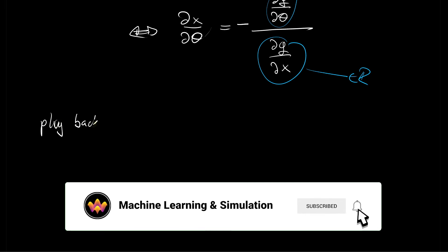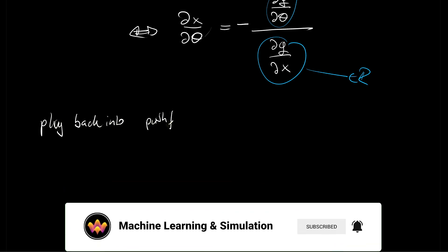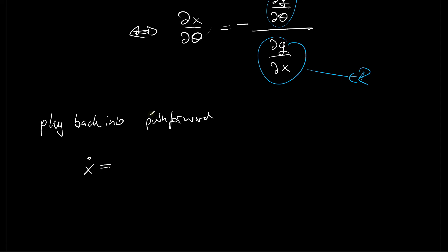So let's say plug back into the pushforward. And then we see that x dot is essentially minus dg by dx inverse multiplied with dg by d theta multiplied with theta dot. And if we had a multivariate case in which x and theta are not just scalars but vectors, this would induce a solution to a linear system of equations. But here in the scalar case, we can just divide by that and avoid this linear solution.